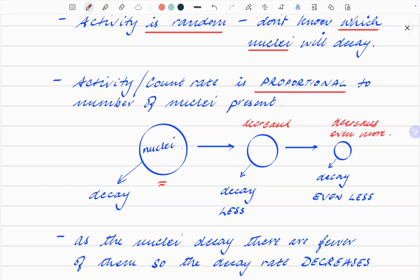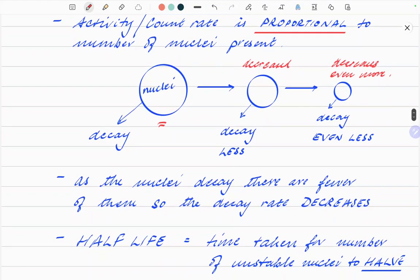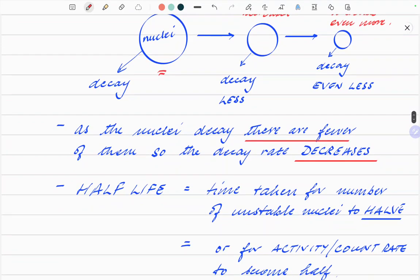As you go along, the number of pops will actually decrease because the number of corn kernels left yet to pop also decrease. I hope that makes sense. There are fewer of them. So the decay rate decreases as the amount of the substance decreases. This brings us to the bit that everybody keeps asking about. Half-life.